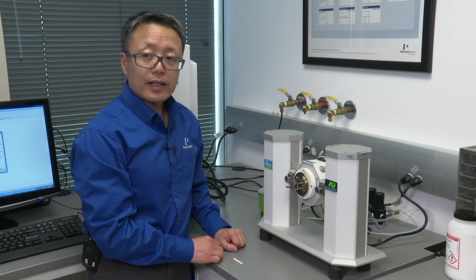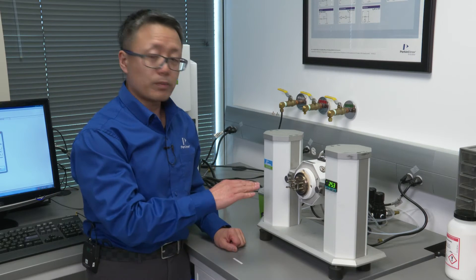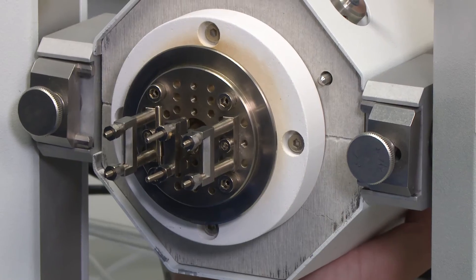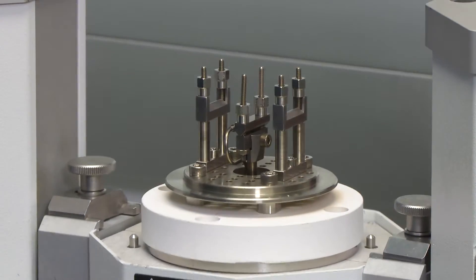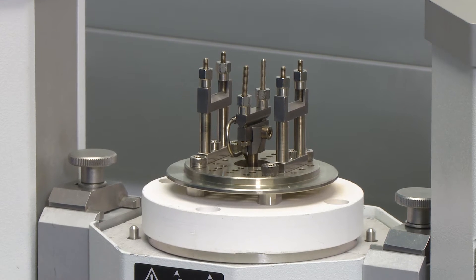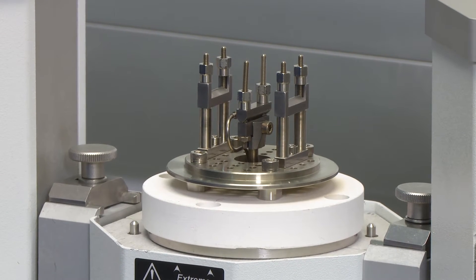After calibrating the zero position at the horizontal position, the second step of the calibration is to calibrate the probe position at the vertical position.